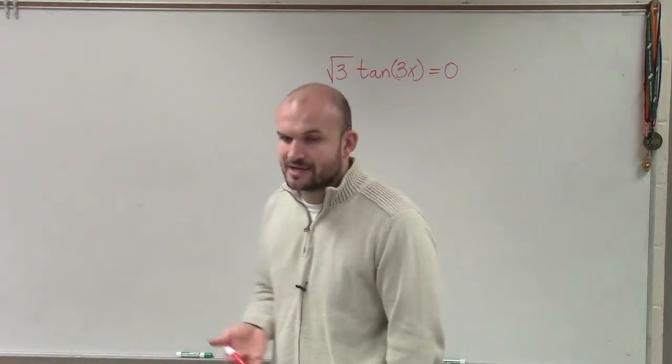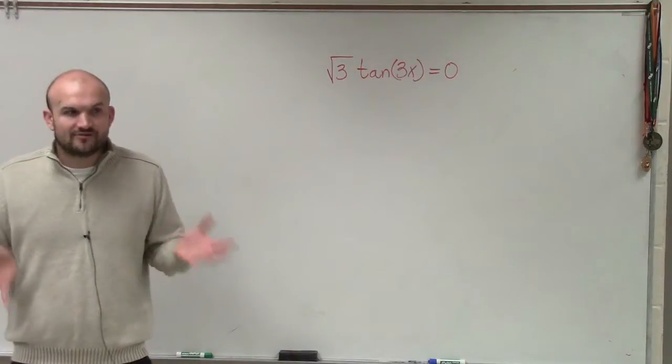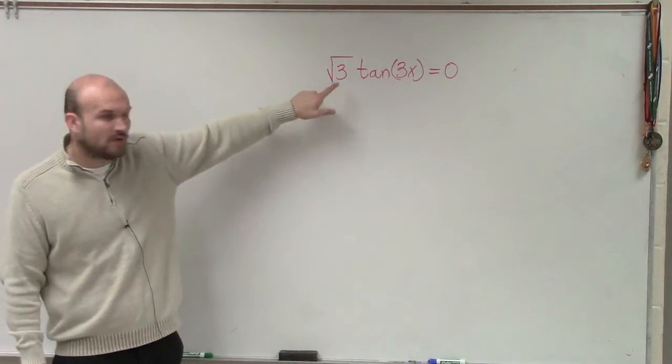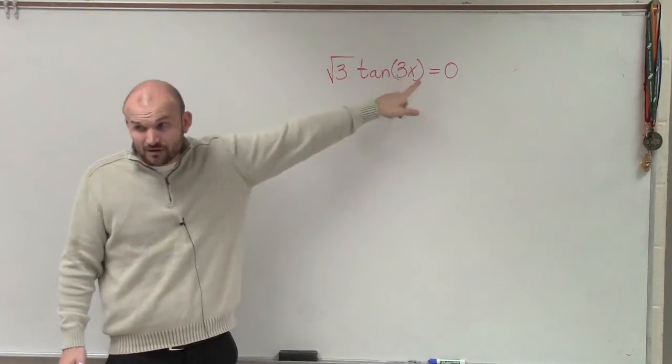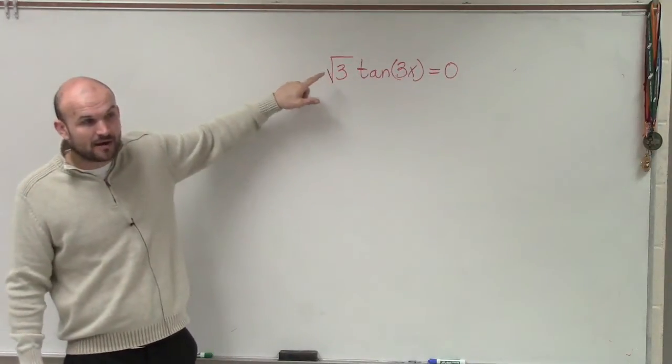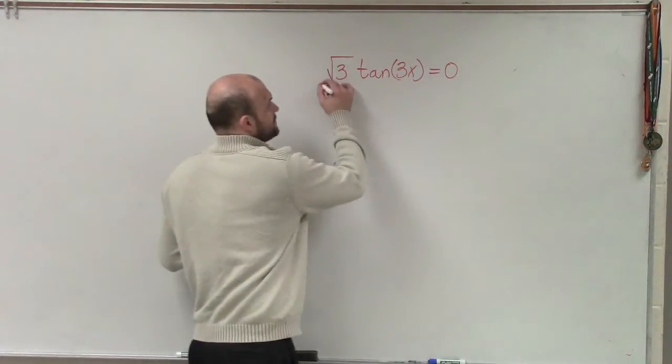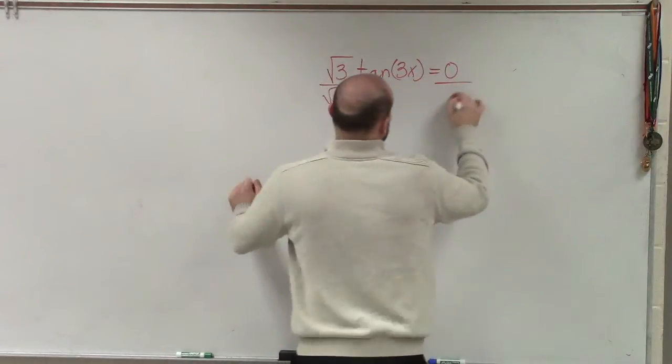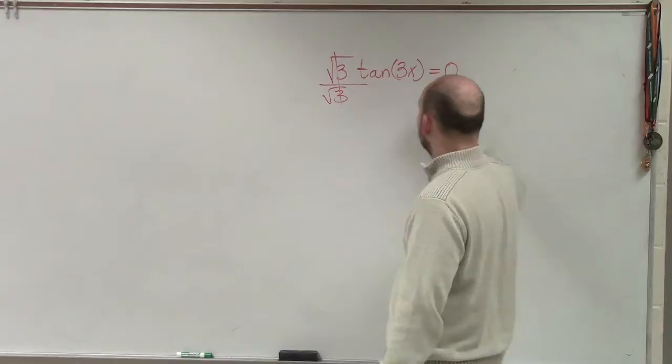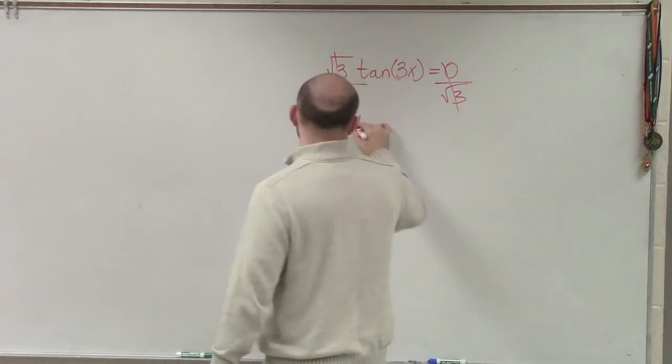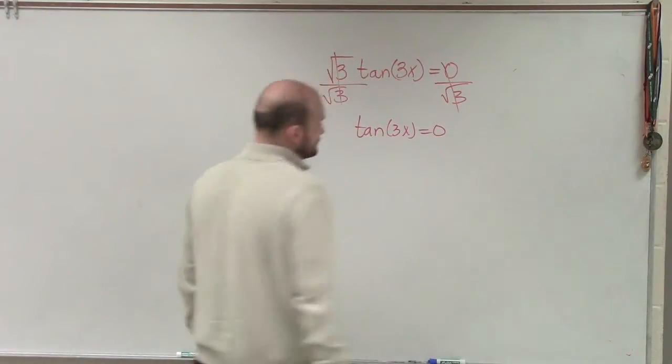We're trying to find the values of this triple angle for tangent. When we're solving, we want to make sure that we can isolate our function. Right now, our tangent function is being multiplied by the square root of 3. Our angle is being multiplied by 3, but not our function. So I need to isolate that by eliminating it. I'll divide by the square root of 3 on both sides. So that goes to 1, that goes to 0. Now I have the tangent of 3x equals 0.